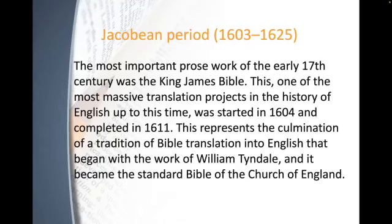The most important prose work of the early 17th century was arguably the King James Bible, one of the most massive translation projects in the history of English up to that time. It was started in 1604 and completed in 1611, representing the culmination of a tradition of Bible translation into English that began with William Tyndale, and it became the standard Bible of the Church of England.